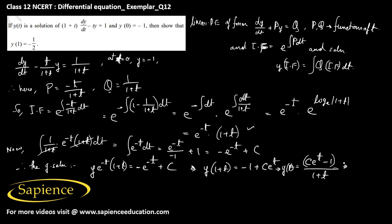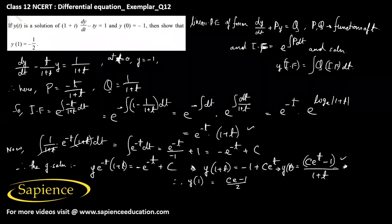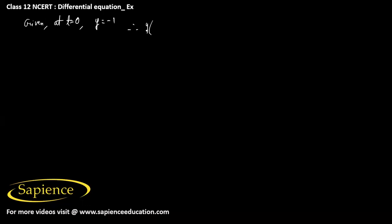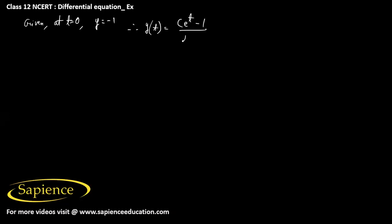So y(t) equals (c·e to the power of t minus 1) divided by (1+t). We need to find y(1), so putting t equals 1 gives y(1) equals (c·e minus 1)/2. To find c, we use the initial condition: at t equals 0, y equals minus 1. Substituting into y(t) gives y(0) equals (c·e to the power of 0 minus 1)/(0+1) equals minus 1.